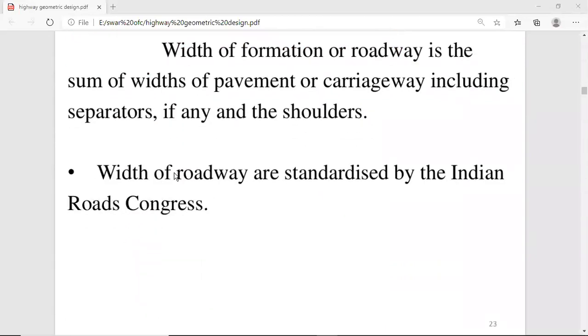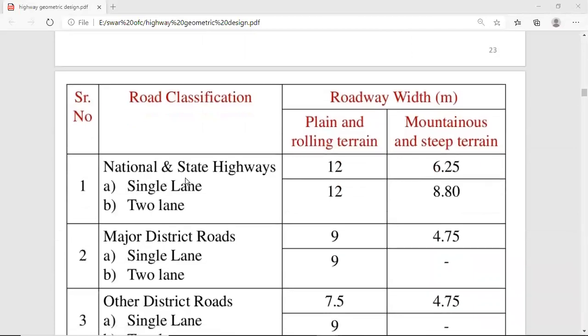If we talk about total width and roadway, the total width means whatever the area is - whether it is my pavement, width of pavement, carriageway, separator, shoulder, all of these things - the total of my width, we call width of formation or width of roadway. The width of roadway is fixed by the IRC on the basis of separator, shoulder, and width of pavement or carriageway. If my width of pavement is set, then after that we have to see how much my total width is, which I have to give for separator and shoulder.